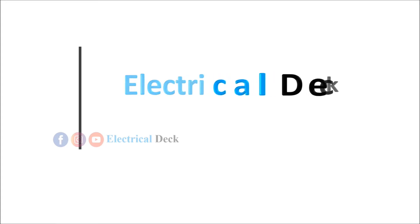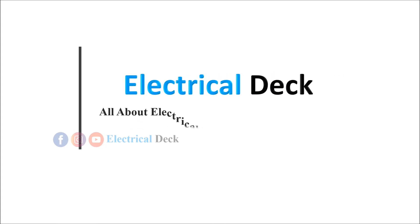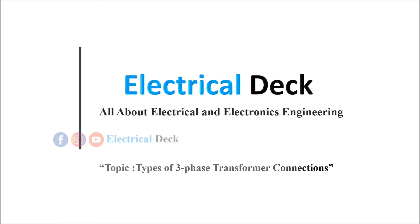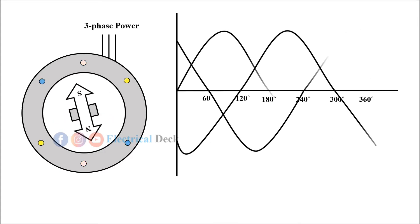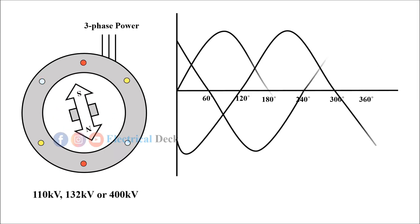Hello friends, welcome to the channel Electrical Deck. In this video we are going to learn about types of three-phase transformer connections. The generation of electrical power is usually at three-phase and at higher voltages. Similarly, transmission of electrical power is also at very high voltages like 110, 132, or 400 kilovolts.